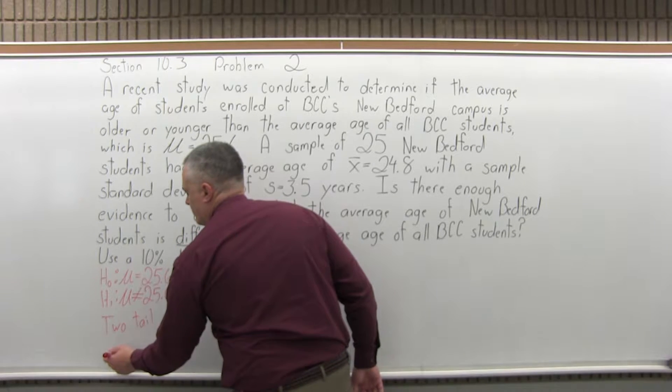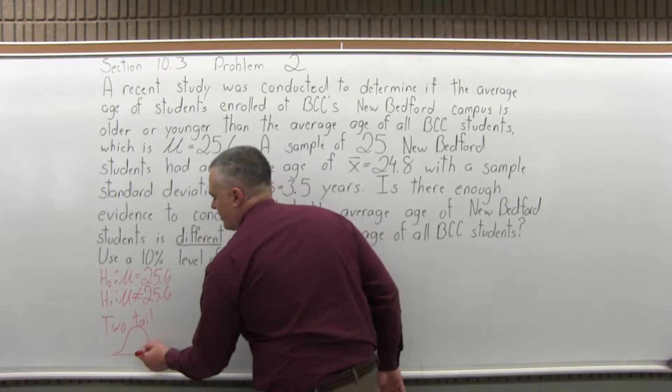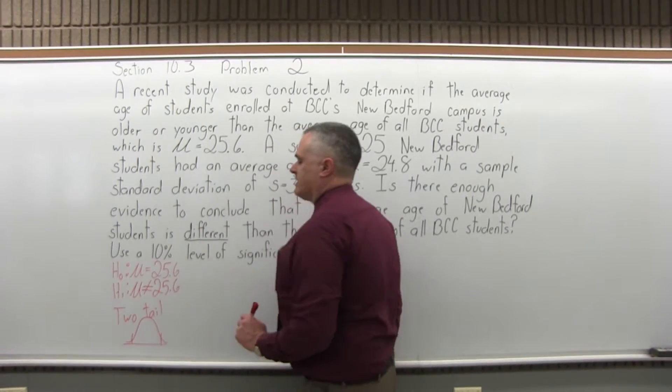So for two-tail, you have a critical region at each end of your graph, and that's what we're going to have. That's the two-tail.